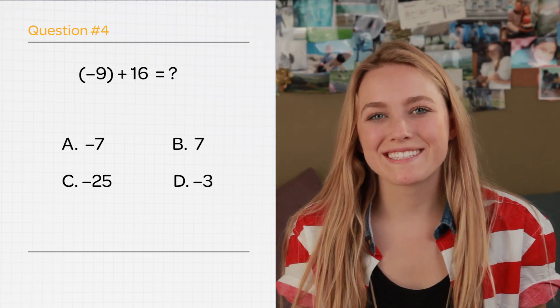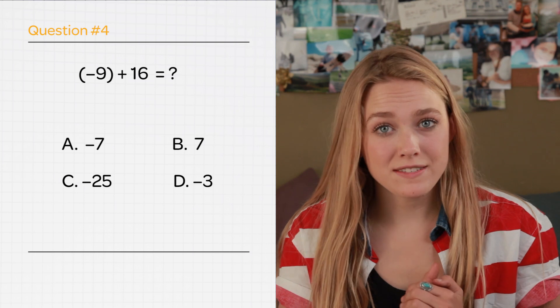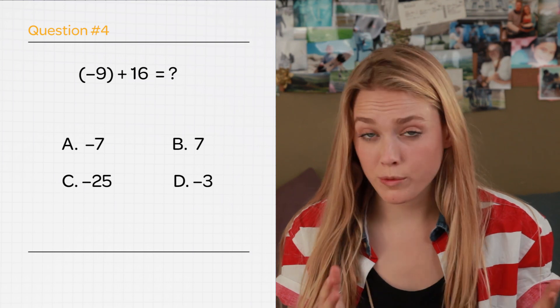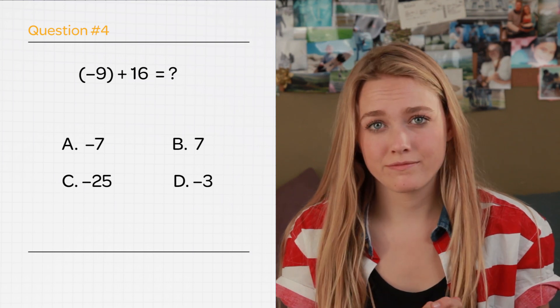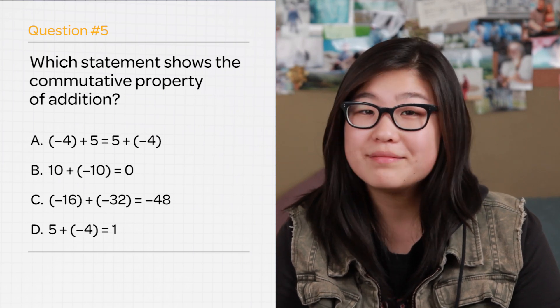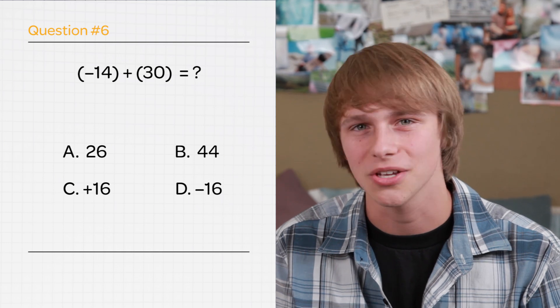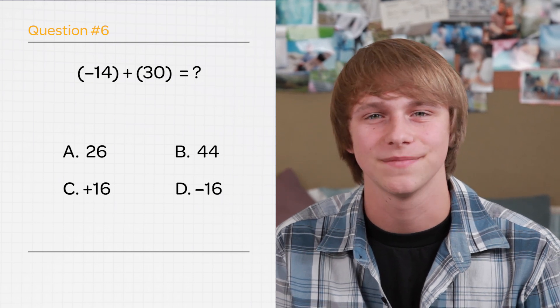You're doing great. Let's keep going. If you have negative 9 and add positive 16, what do we get? Which statement shows the commutative property of addition? What is negative 14 plus positive 30?